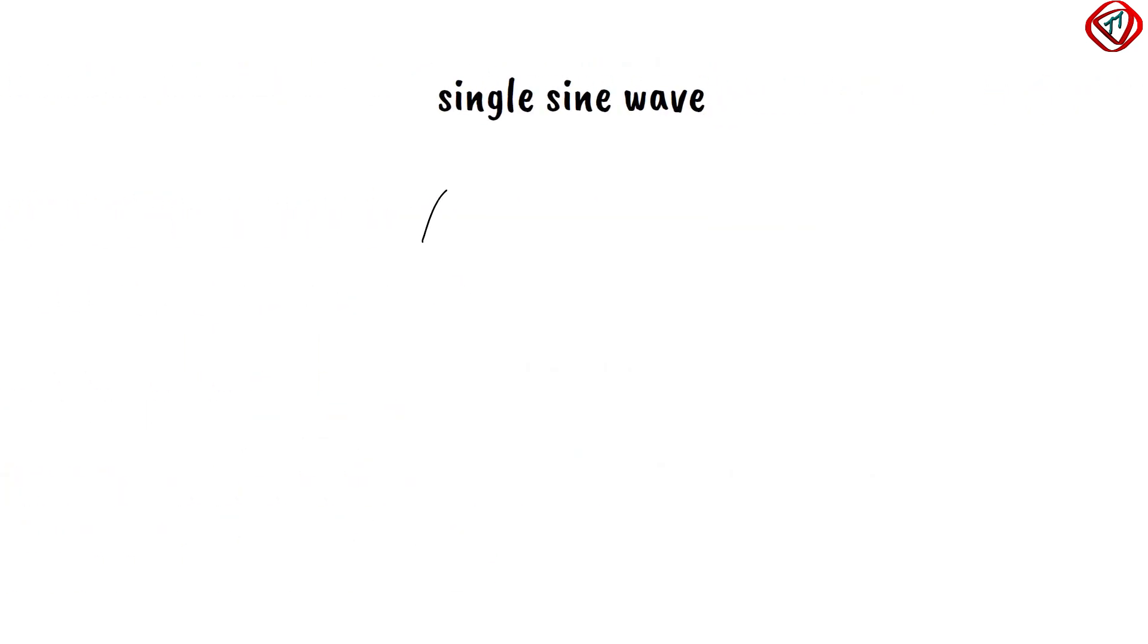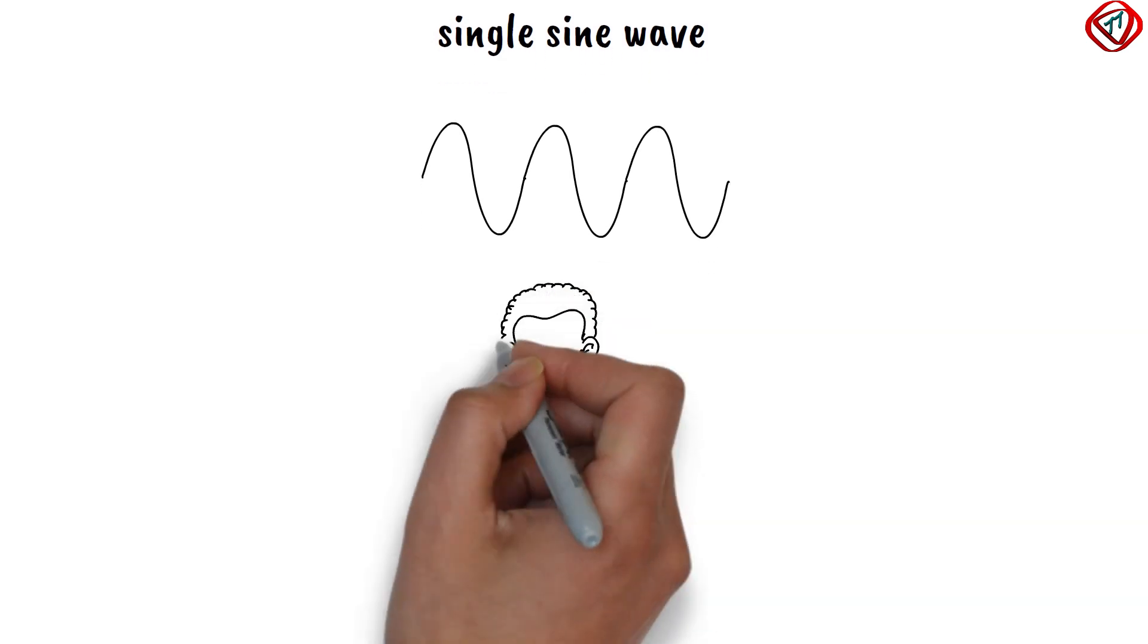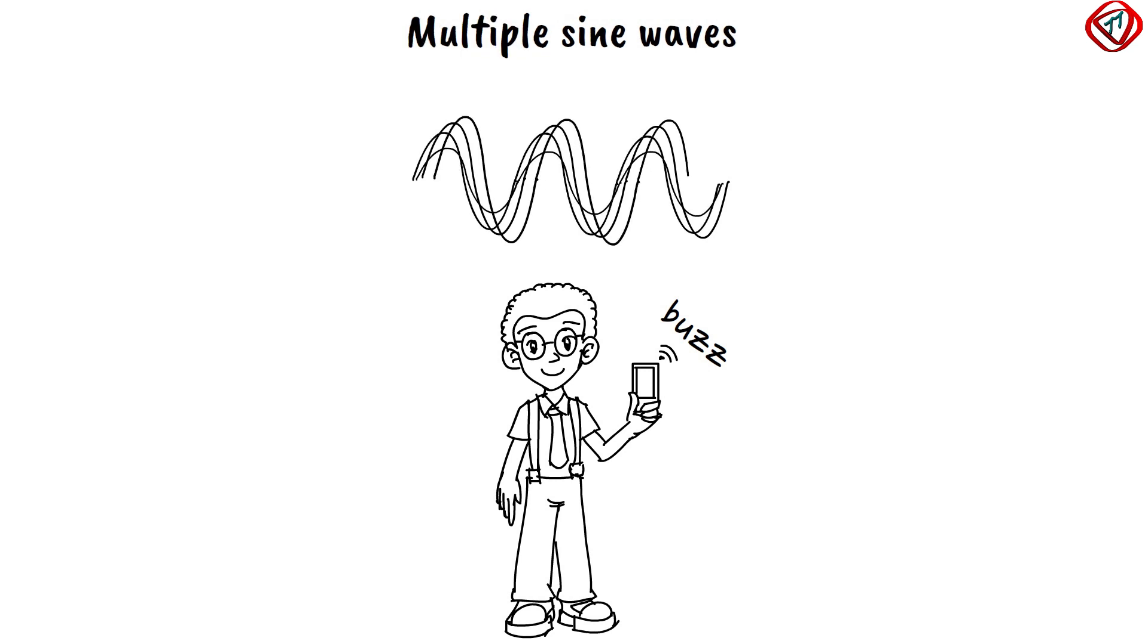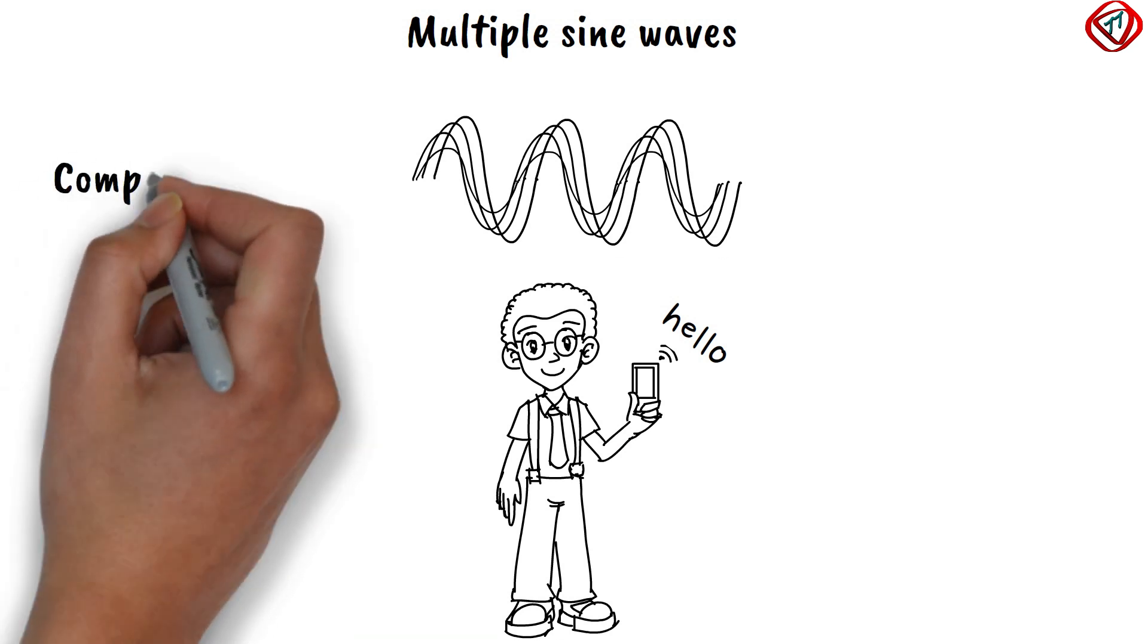A single sine wave is not useful in data communication. If we are talking over the phone and only one sine wave is allowed, then we would just hear a buzz. So we need to send multiple sine waves over the phone to talk to the other person. Such a signal is called a composite signal.